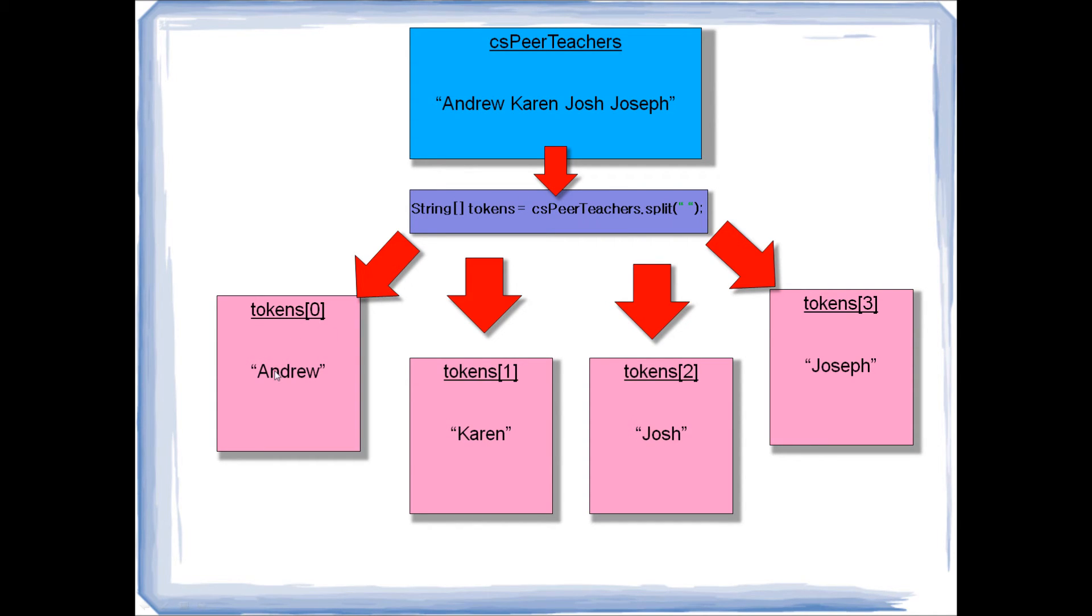So tokens 0 will equal Andrew. Tokens 1 will equal Karen. Tokens 2 will equal Josh. And tokens 3 will equal Joseph. But this doesn't have to just be a space. If our names were split by commas, as our delimiter, we could put a comma. And this would split our names into the tokens the exact same way that the space would, just using a comma as delimiter.